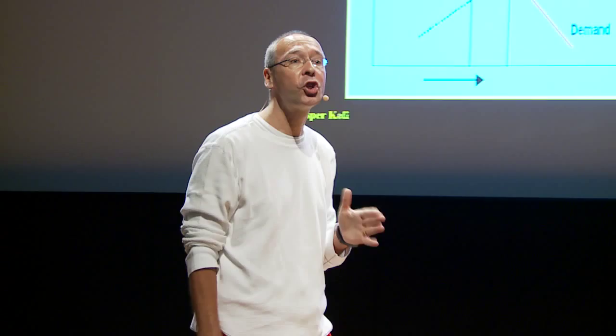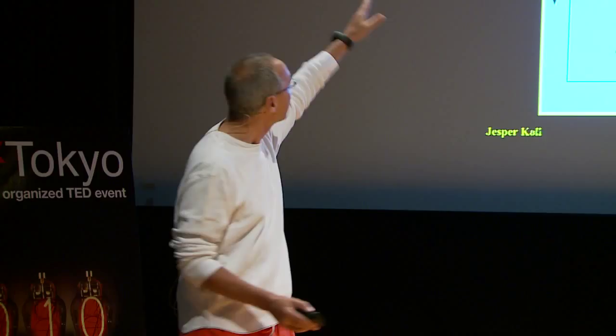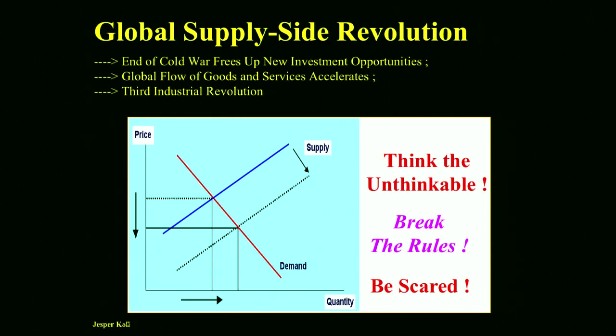Of course, there is a big underlying force going on in the global economy right now that we should not forget about. There is a gigantic supply-side revolution going on in the world. Everywhere — whether it's Germany, India, Brazil, Papua New Guinea — you find new entrepreneurs wanting to offer more goods and services using innovation, creativity, technology, for lower prices. Think the unthinkable, break the rules, be scared. That has not changed whatsoever.